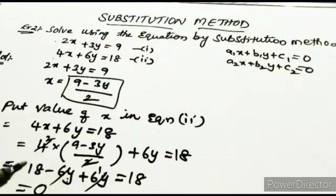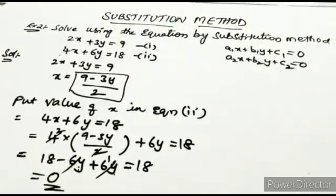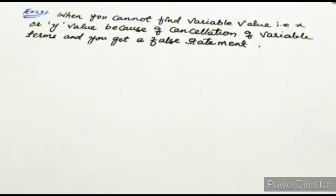When we are cancelling the variable terms and not getting a value for the variable, we get a result like 18 equal to 18. This type of solution is called an infinite solution. When we are not able to find the variable value because the variable terms cancel out, this type of solution is called an infinite solution. Let us do one more example.